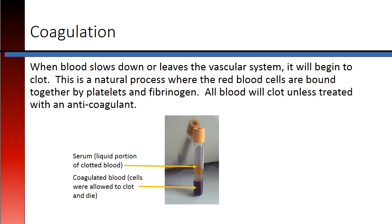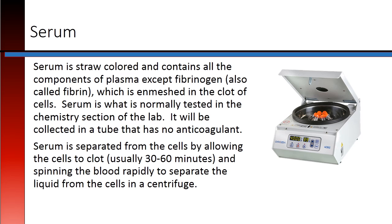When blood slows down or leaves the vascular system, it will begin to clot. This is a natural process where the red blood cells are bound together by platelets and fibrinogen. All blood will clot unless treated with an anticoagulant. Serum is straw-colored and contains all the components of plasma except fibrinogen, also called fibrin, which is enmeshed in the clot of cells.